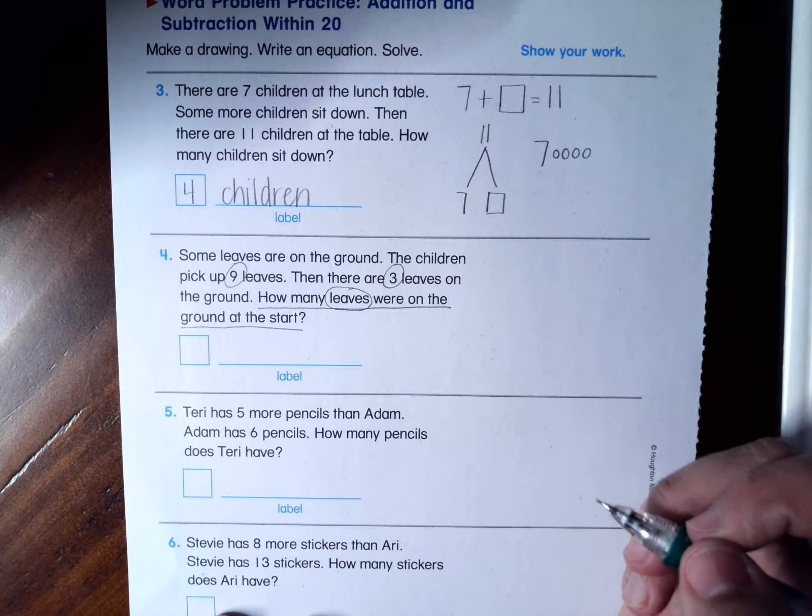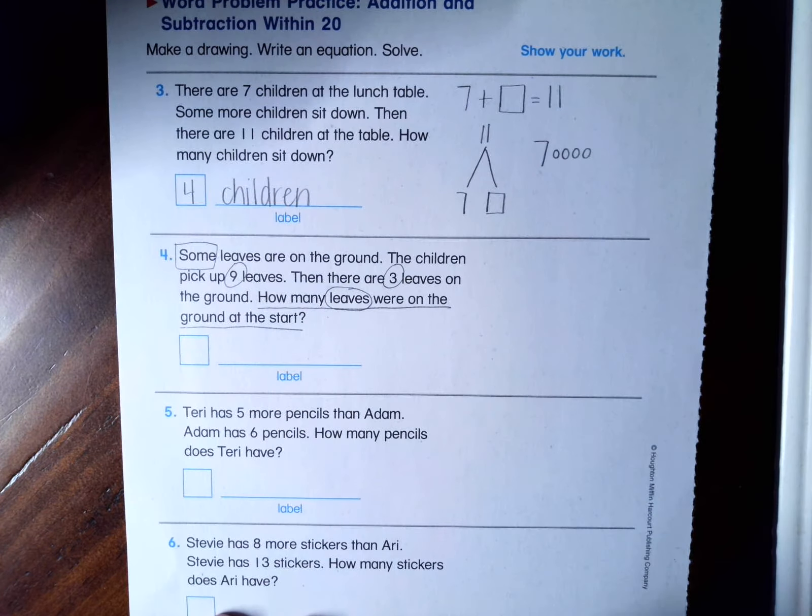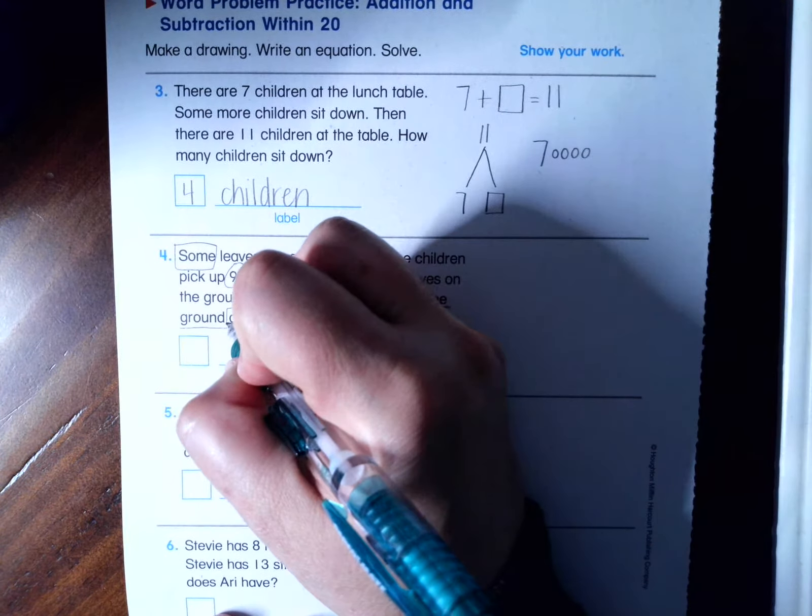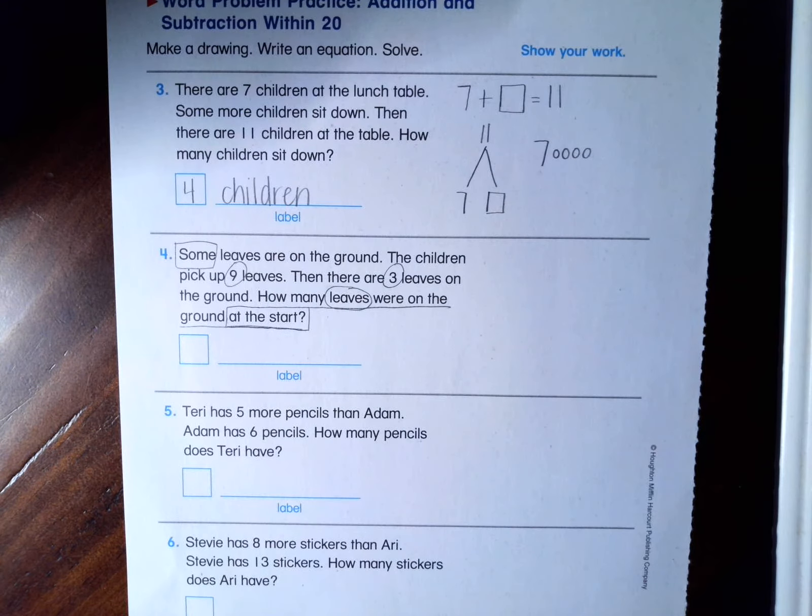How many leaves were on the ground at the start is my question. Now I'm going to box up some clue words. I see some leaves at the beginning. And in my question, it says at the start. So think way, way back into unit one. That was at the beginning of the school year. Seems like a lifetime ago. This is an unknown start.